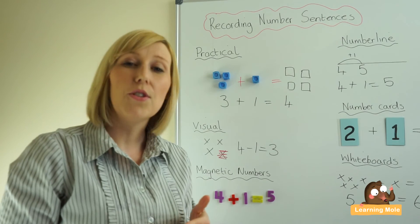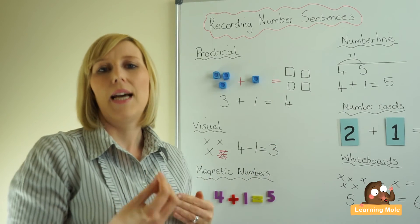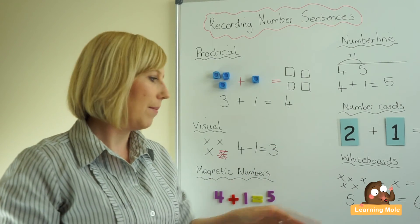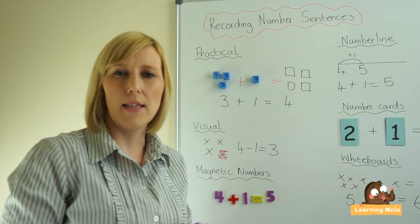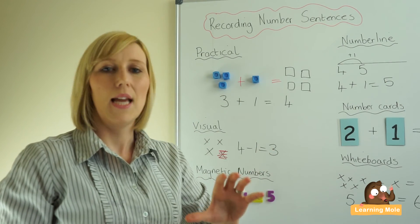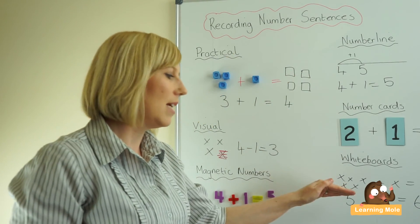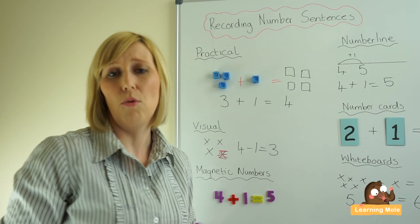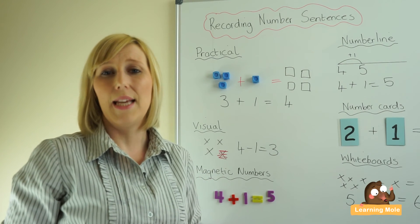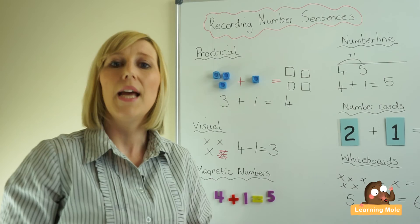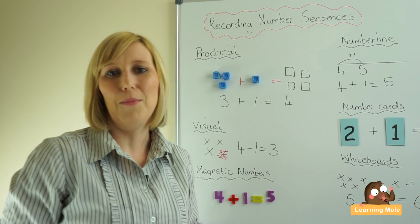Once you've done that, you want to foster independence in your child — introduce number stories again and say 'this time I don't want you to draw any pictures, go straight into a calculation — what calculation would you do?' Really foster that independence and allow children to put maths into context and into practice. Now that they've completed all these stages, they should feel confident recording in a more formal way. It's all about practice and making sure your child is secure with the numbers and symbols before pushing them down the road of formal recording.